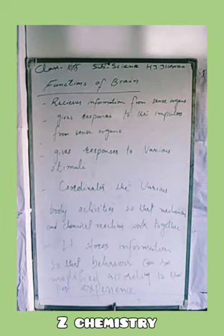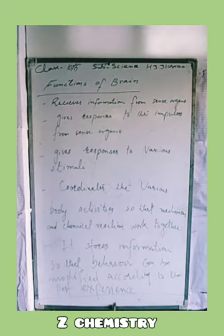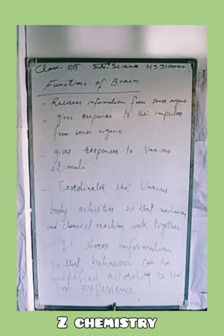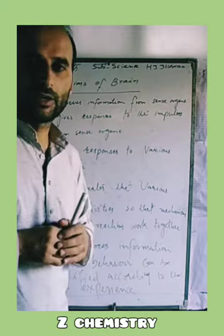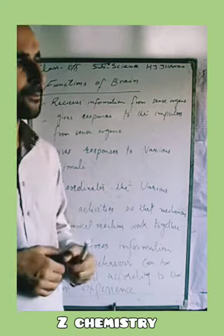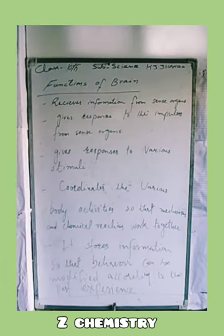The brain responds to the impulses which are brought in by sensory organs. It responds to the impulses by sending instructions through motor nerves to the muscles and glands, causing them to function accordingly. The instructions go through motor nerves to muscles or glands, which we call the endocrine system.